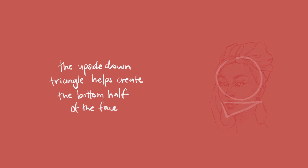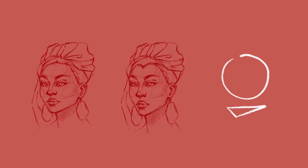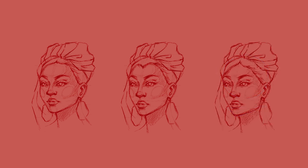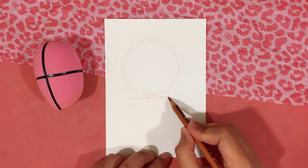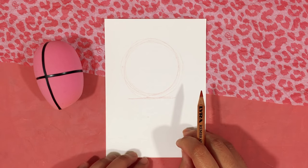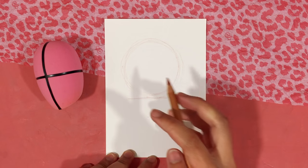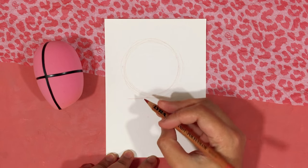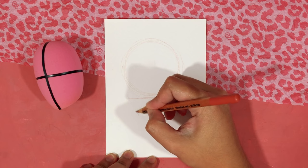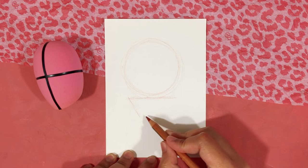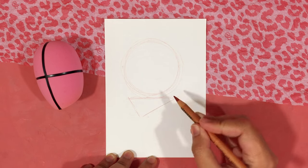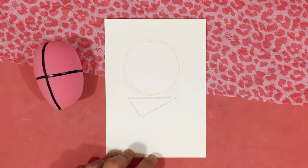By changing the height of the triangle and the distance of this to the circle, we can actually create different face shapes — such as a round shape, a heart face, and a triangle face shape. For our demonstration, I am drawing a face that is turned to the left. Therefore the upside-down triangle I am drawing is asymmetrical, where the left side is smaller than the right side, following the rule I mentioned before.